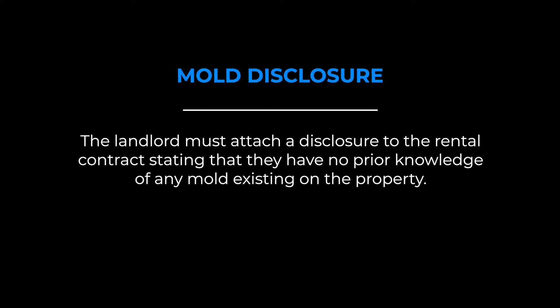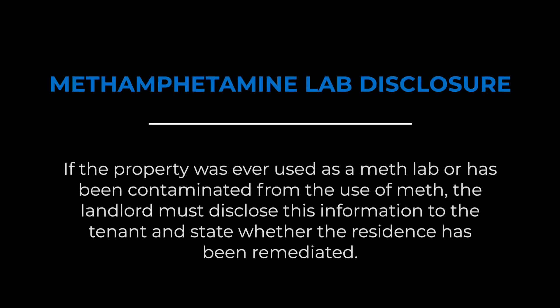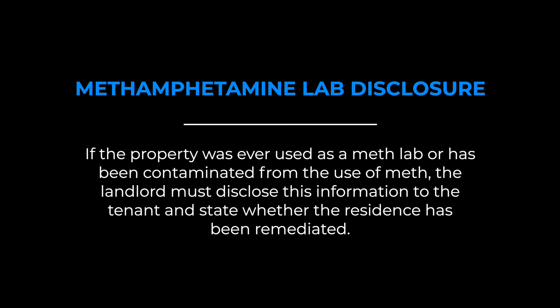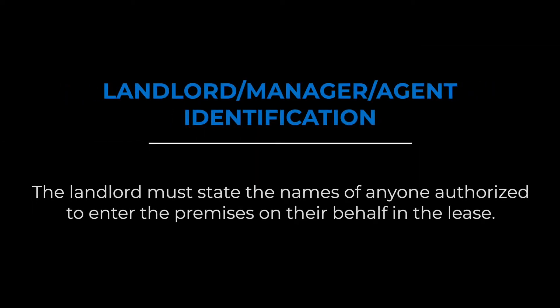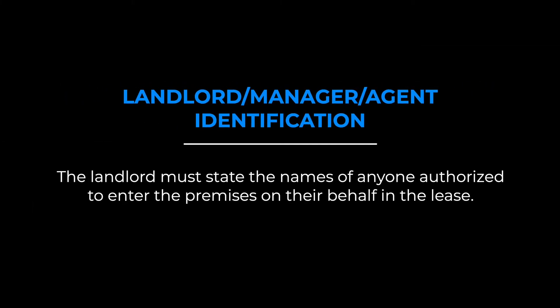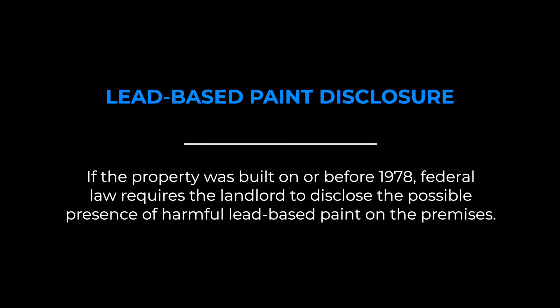The state of Montana requires the landlord to make a total of five disclosures to the tenant. Mold disclosure: the landlord must attach a disclosure stating they have no prior knowledge of any mold existing on the property. Methamphetamine lab disclosure: if the property was ever used as a meth lab or contaminated from meth use, the landlord must disclose this and state whether the residence has been remediated. Move-in checklist: if the landlord receives a security deposit, they must provide a document allowing the tenant to report pre-existing damages. Landlord/manager/agent identification: the landlord must state the names of anyone authorized to enter the premises on their behalf in the lease. Lead-based paint disclosure: if the property was built on or before 1978, federal law requires disclosure of the possible presence of harmful lead-based paint.